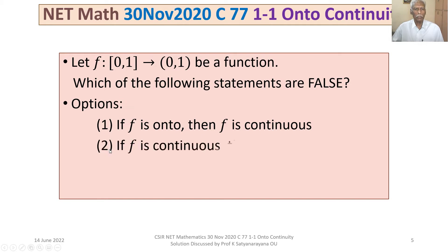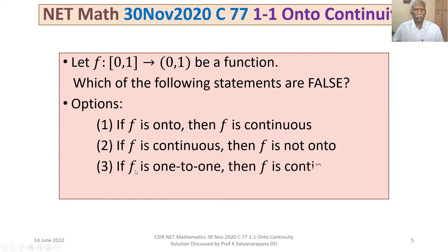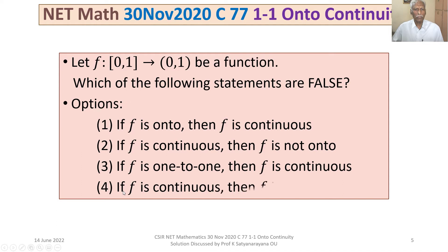Option 2: if f is continuous, then f is not onto. Option 3: if f is 1-to-1, then f is continuous. Option 4: if f is continuous, then f is not 1-to-1. We have to identify which of these statements are false.